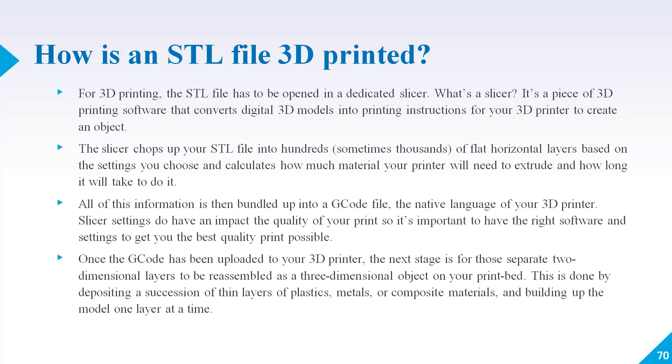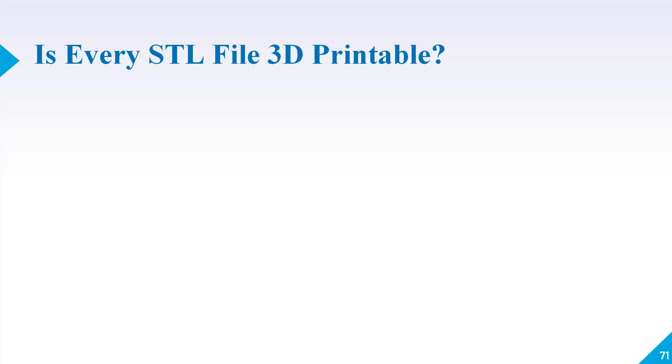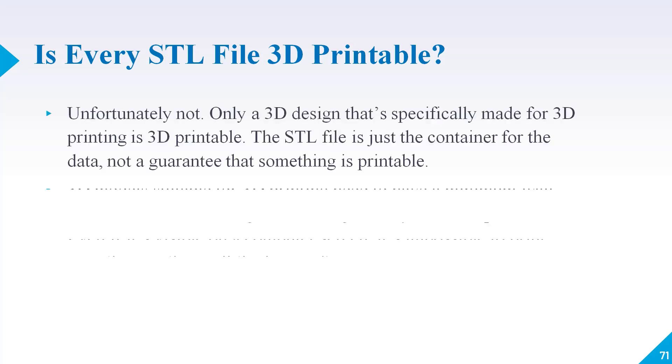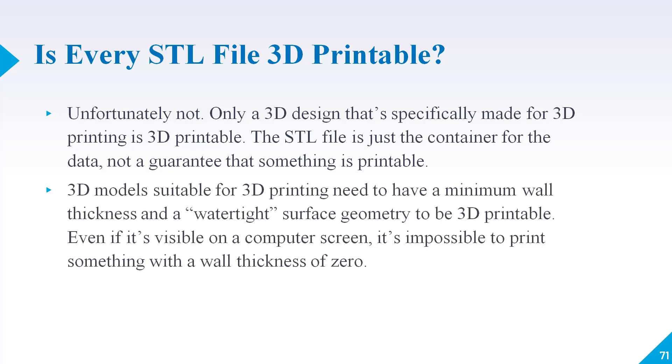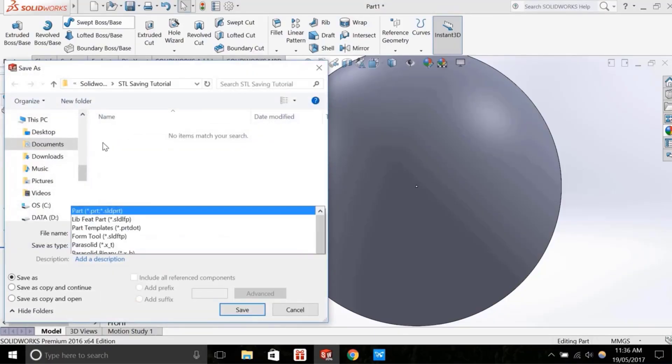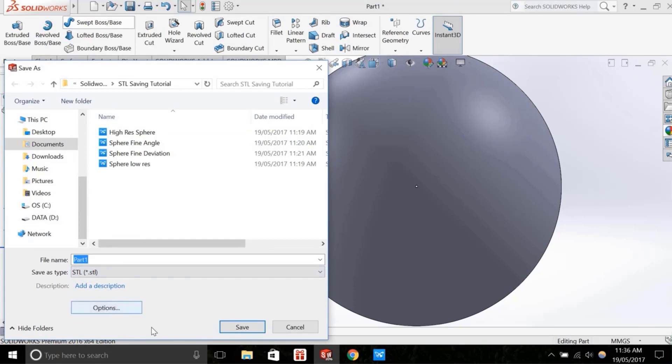Next question: is every STL file 3D printable? Unfortunately not. Only a 3D design that is specifically made for 3D printing is 3D printable. The STL file is just the container for the data, not a guarantee that something is 3D printable. 3D models suitable for 3D printing need to have a minimum wall thickness and watertight surface geometry to be 3D printable. Even if it's visible on a computer screen, it's impossible to print something with a wall thickness of zero.